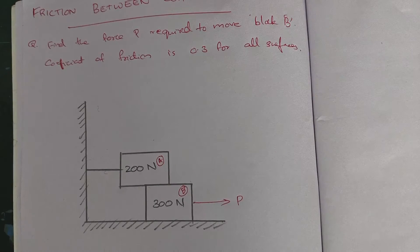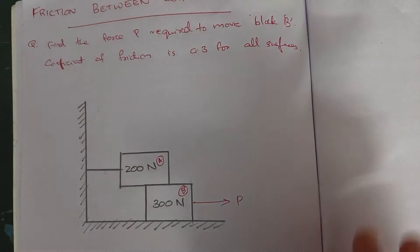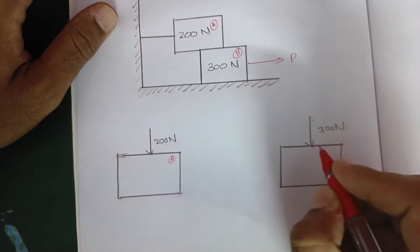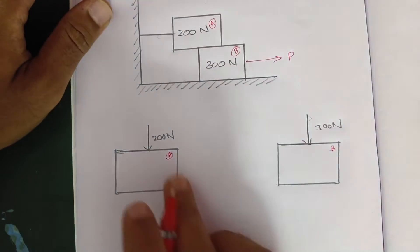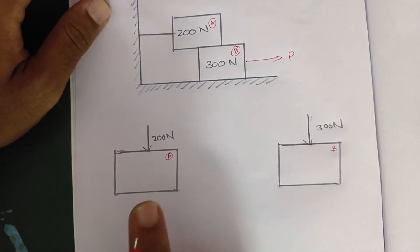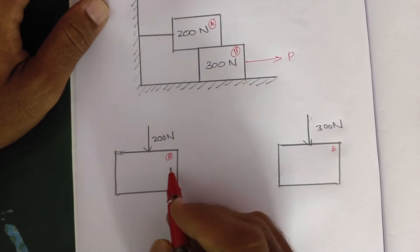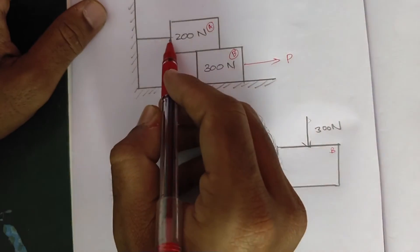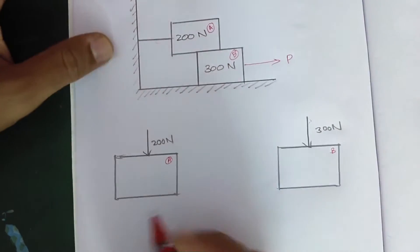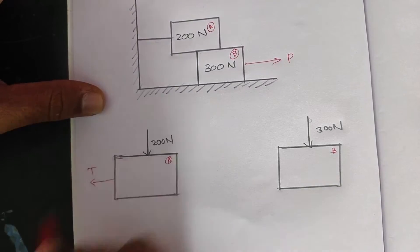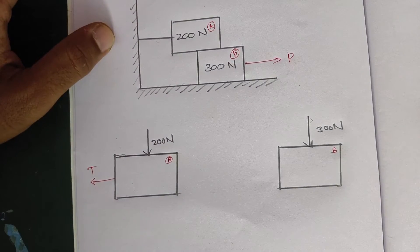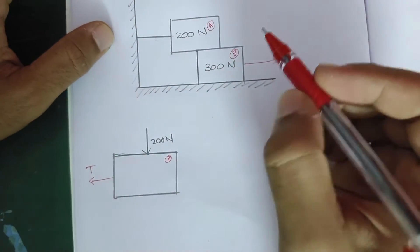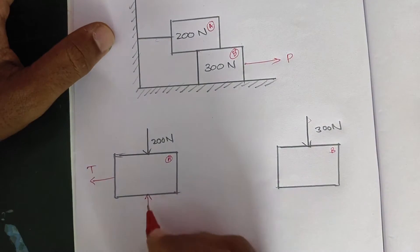Consider the free body diagram. There is a free body diagram for block A and block B. The weight of the block is 200 Newton. There is a tensile force T marked. This block is in contact with the surface and the reaction force is R1.